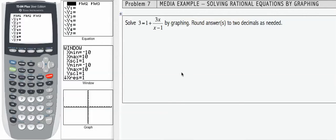In this problem, we're solving rational equations by graphing. We're going to use the intersection method that we have been using throughout the course. I'm given 3 equals 1 plus 3x divided by the quantity x minus 1.